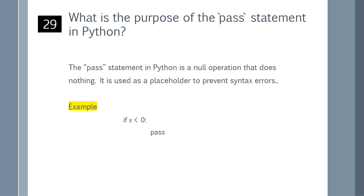What is the purpose of the pass statement in Python? The pass statement in Python is a null operation that does nothing. It is used as a placeholder to prevent syntax errors. You can refer to the example shown on the screen.